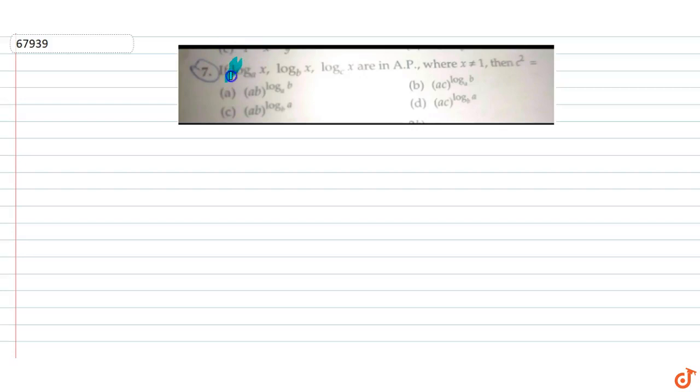The question given is: if log x to the base A, log x to the base B, log x to the base C are in AP, where x is not equal to 1, then c squared is equal to?